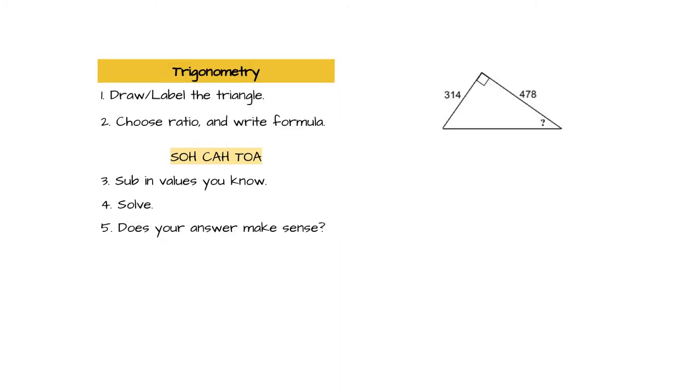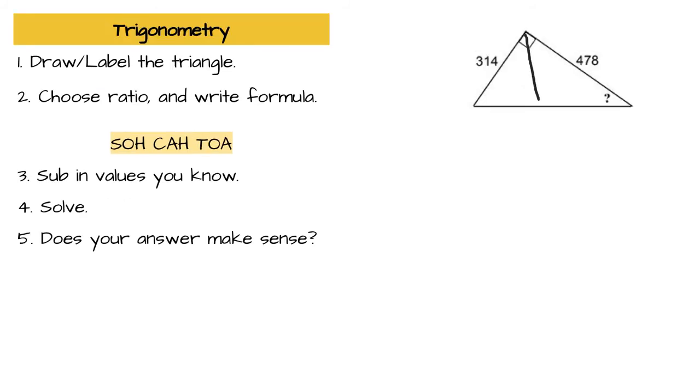All right, let's look at another example. Again, we're going to begin by labeling our triangle for the parts that we know. So we know straight across from the right angle is our hypotenuse. Then based on our indicated angle, this would be our opposite side, and this would be our adjacent or touching side.